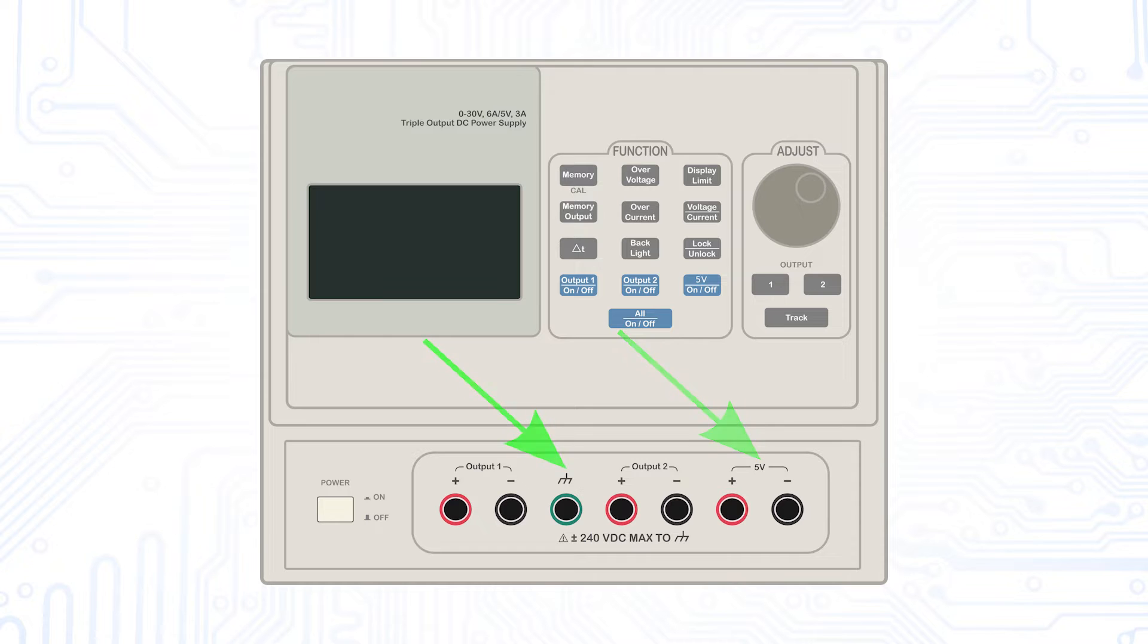In addition, there is a ground connection which is connected to the building ground via the power cable. Note here that in our case all outputs are floating and not connected internally. They therefore do not have fixed reference potentials, which can be very advantageous.